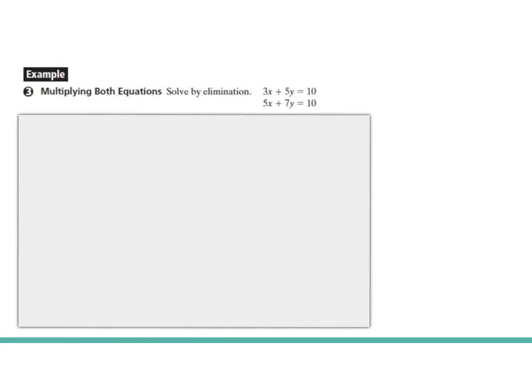Here in our final example of elimination, we have two equations. If you notice, both equations, there is no common x's or y's that if we just multiplied one equation by, we would be able to eliminate a variable. So in this case, we have to multiply both equations by different numbers.